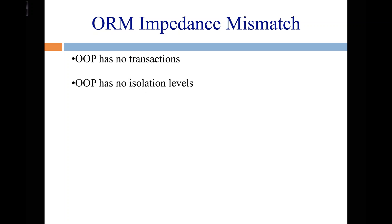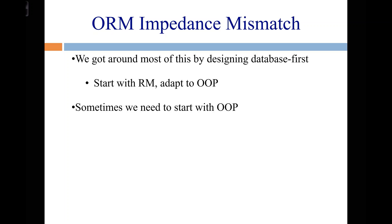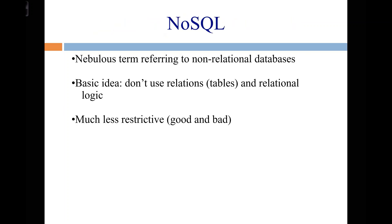All these fundamental design differences mean it's not always going to be easy to match the relational model to your software model. For us, it was easy because we started with a relational model and there's an automatic scaffolder that generates all the code we need. Getting around this object-relational model impedance mismatch problem, and other problems, is this idea called NoSQL.